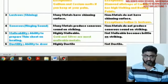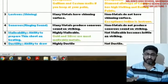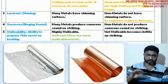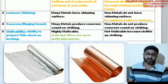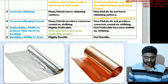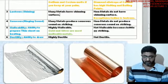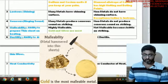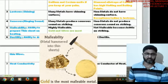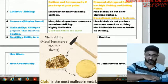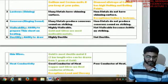Malleability is the ability to be prepared into thin sheets. Sheet metals like copper, silver, and gold can be beaten into thin films. Gold and silver are the most malleable metals. Nonmetals are not malleable — they cannot be formed into thin sheets by striking.